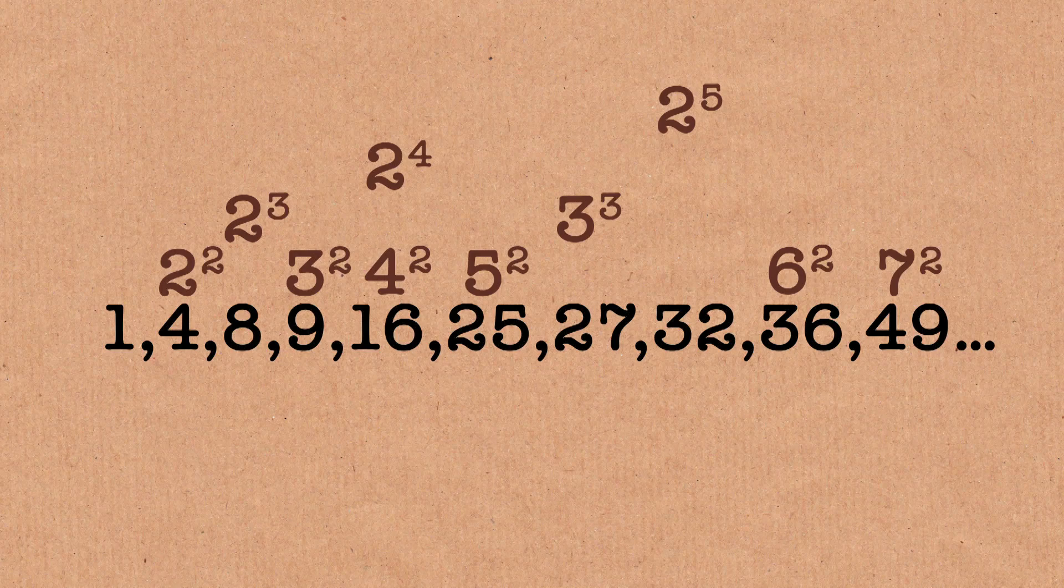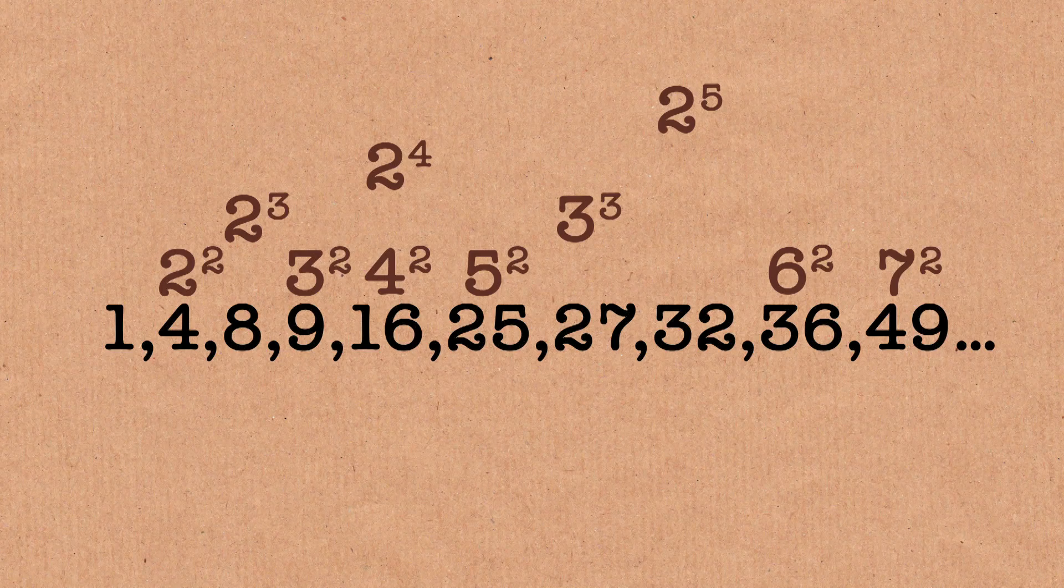So do these numbers become more common or less common the further we go down the number line? So they become less common, and generally you think they're spread out. Just think about squares, for example. If you hand me a big number, like a million, and you want to know about how many squares are less than a million, well, it's about square root of a million, right? Because that's how small the number has to be to be less than a million after you square it.